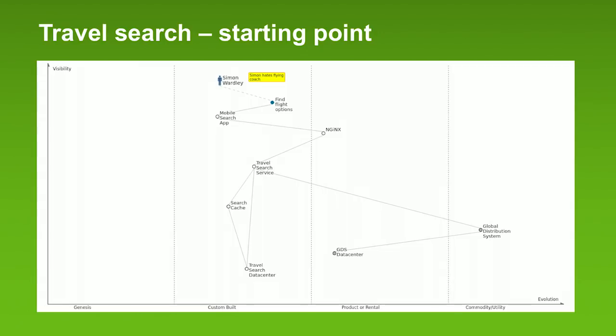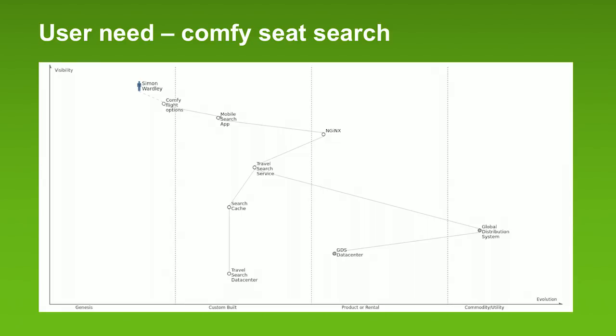Simon likes to be comfortable. So here's a new user need — something that hasn't been done before. He wants to find comfy options: a nicer seat, aircraft that are particularly comfortable to fly in. Maybe you want to find an Airbus A380 or a Boeing 787 Dreamliner, because those are more comfortable than an ancient plane from 20 years ago that's still flying. So you modify your mobile app to create that option. But the problem is you now need a lot more data, so the system is getting slower and more costly to run, because you're providing much more personalized options requiring a lot more data. Simon's happy, but the app's a bit slow, and the people operating the service aren't happy because it's costing more.